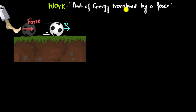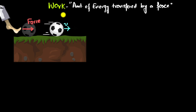Work is the amount of energy transferred by a force. In physics it has a very specific definition — work is always done by a force. Whenever you think about work in physics, always ask yourself: which force is doing the work? And remember what that work represents: how much energy got transferred. Since work represents energy transferred, its unit is the same as energy — joules — and just like energy, it is a scalar quantity.